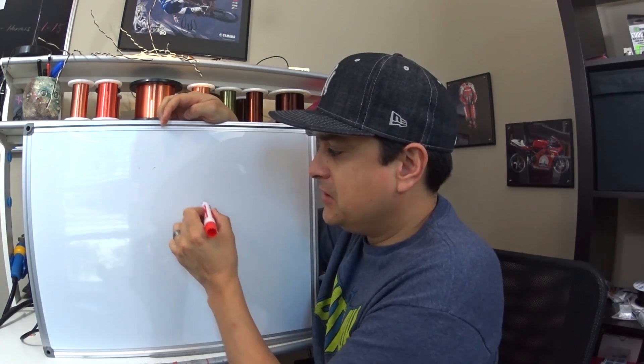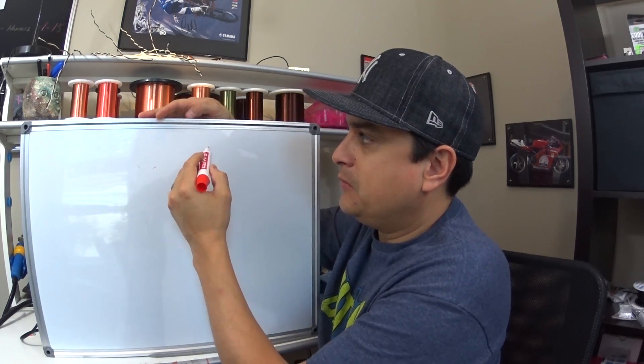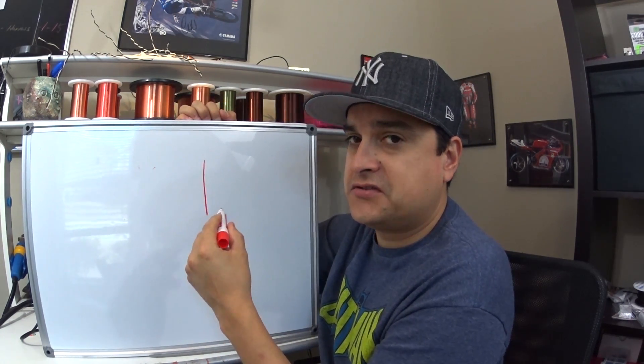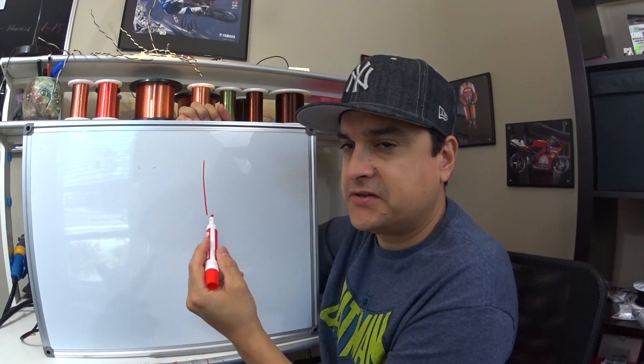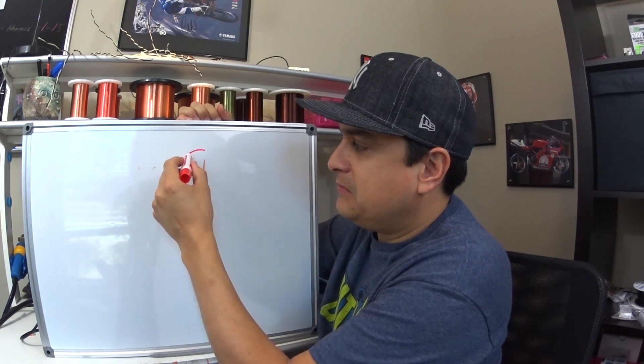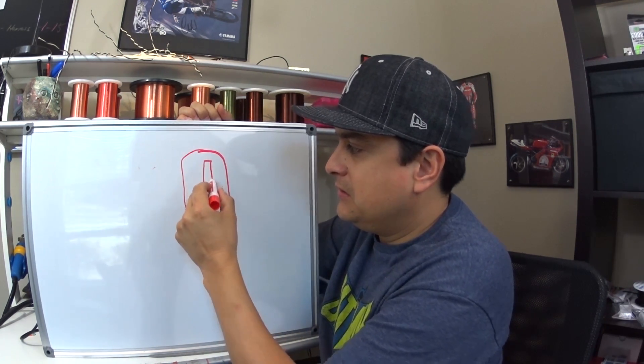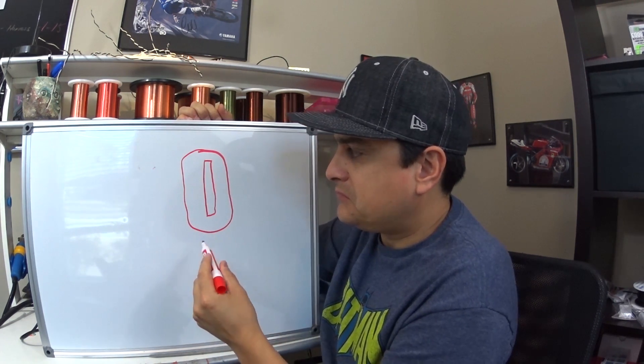So if we look at a single coil pickup pole, and I'll actually have some pretty cool pictures in the written part of this blog, we make this magnetic bloom around this pole. Okay. So here's this pole.